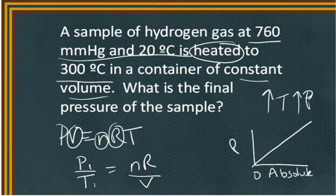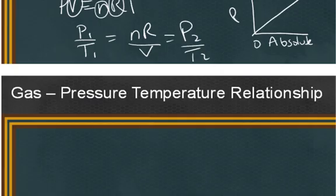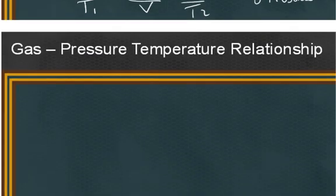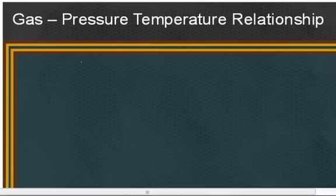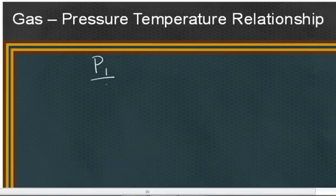And so we can say, at the beginning condition, P1 over T1 is equal to the constant, and the end condition as well. So we can use this equation to solve this pressure-temperature relationship. And that is that the initial conditions are equal to P2 over T2.